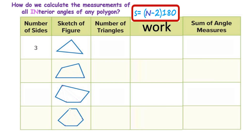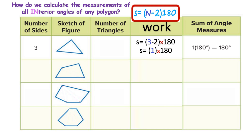With this formula, we know that no matter what the triangle is — obtuse, acute, right angle, scalene, isosceles, or equilateral — they're always going to equal 180 degrees because the number of sides in a triangle is always 3. If I use the formula and plug in N equals 3, I do 3 minus 2, which is 1, and then 1 times 180 equals 180. S is the sum of the interior angles, so every triangle is 180 degrees.